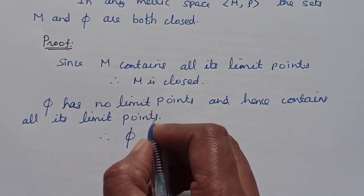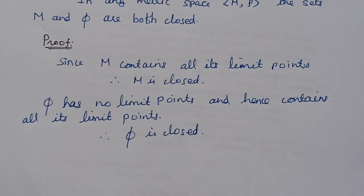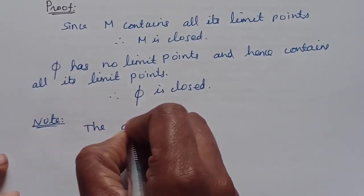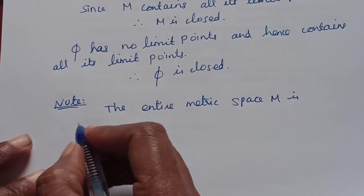Therefore the empty set, or the null set, is closed. If we have a set that is both open and closed, it will be open and closed simultaneously. This is the example of a set that is open and closed simultaneously. The entire metric space M is open as well as closed, and the empty set is open as well as closed — simultaneously open and closed.